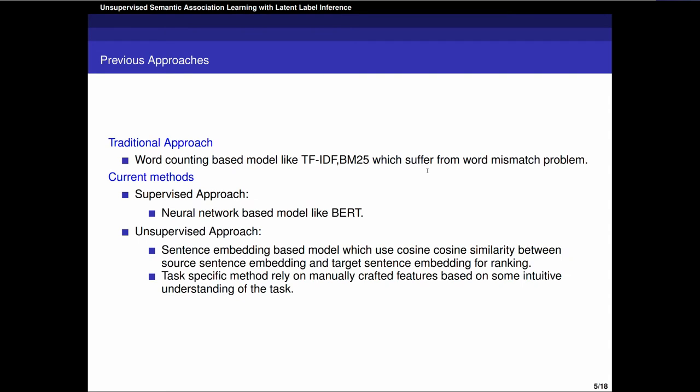The traditional word counting-based methods like TF-IDF and BM25 ignore the semantic similarity between two sentences, so they suffer from the term mismatch problem. With the development of deep learning, current methods focus on neural network-based methods with a large amount of labeled data. But in the unsupervised setting, there are two types of methods.